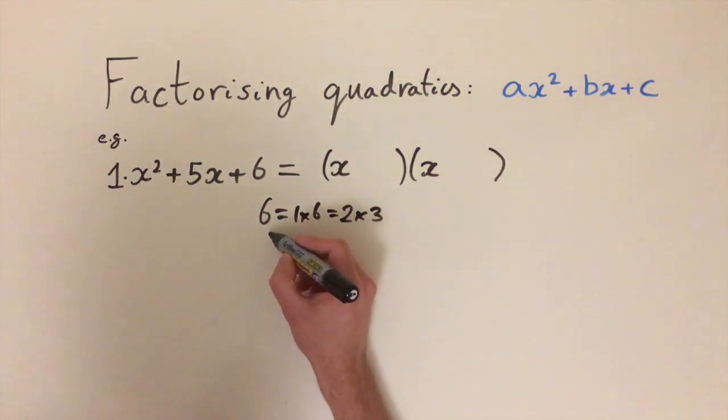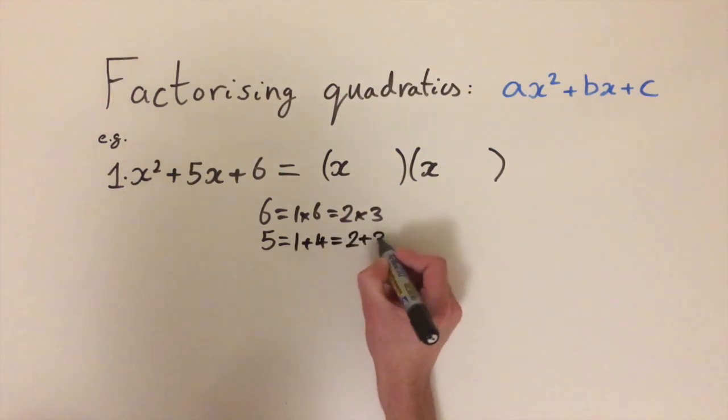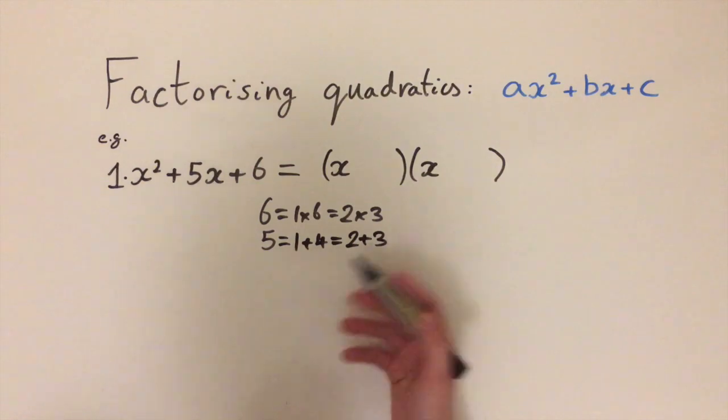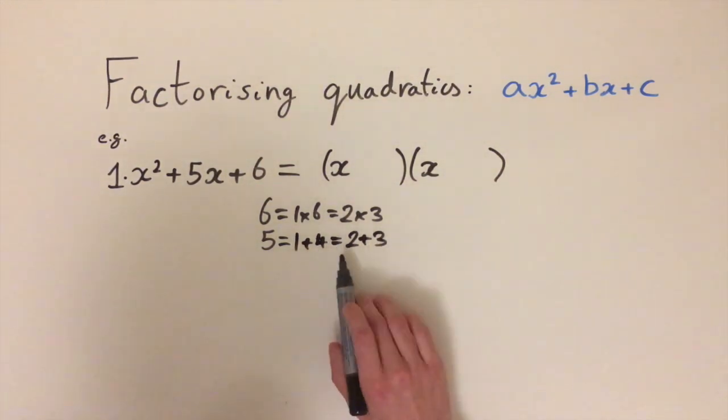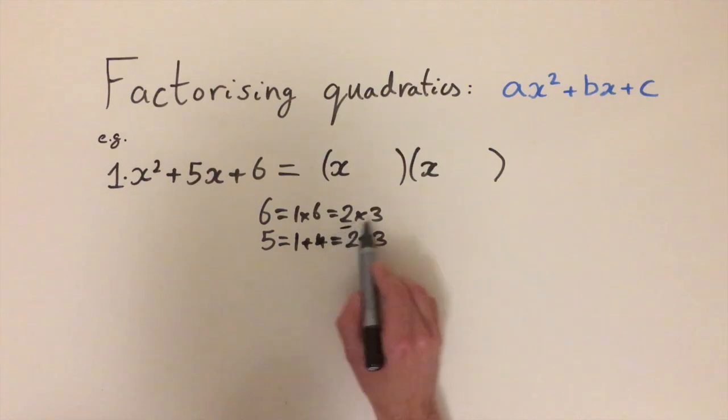And then we can work out what 5 is as the sum of two numbers. We can write 1 plus 4 or 2 plus 3 or 3 plus 2 or 4 plus 1, again just swapping the numbers. So now we're looking for two numbers that line up in both these equations, and we can see that 2 and 3 fit the bill.